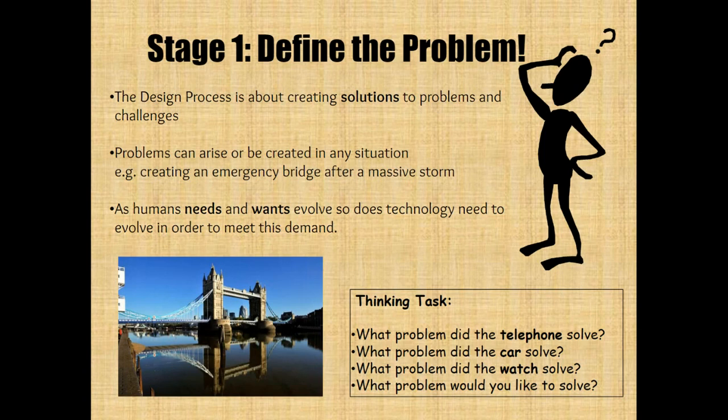Stage one is to find the problem. The design process is about creating solutions to problems and challenges. Problems can arise or be created in any situation — for example, an emergency bridge after a massive storm. As human needs and wants evolve, so does technology's need to evolve in order to meet this demand.